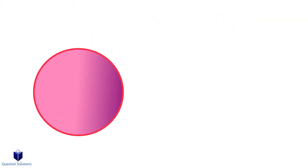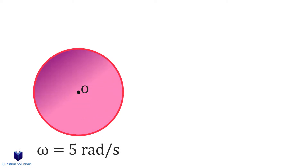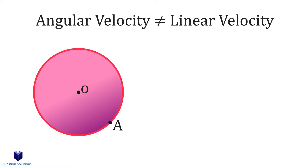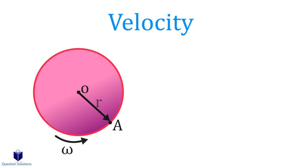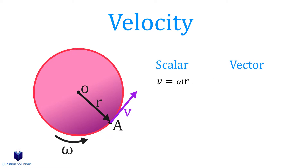Let's say we have a disk spinning with an angular velocity of 5 rads per second. How do we calculate the velocity at a random point, let's say point A? It's important to realize that when we say velocity, we aren't talking about angular velocity, but rather linear velocity, also called magnitude of velocity, measured in meters per second. If we have a position vector from point O to A and multiply it by the angular velocity, we get the magnitude of velocity. If we have everything expressed in cartesian vector form, then we can find the magnitude and direction of velocity by taking the cross product of our angular velocity and the position vector.